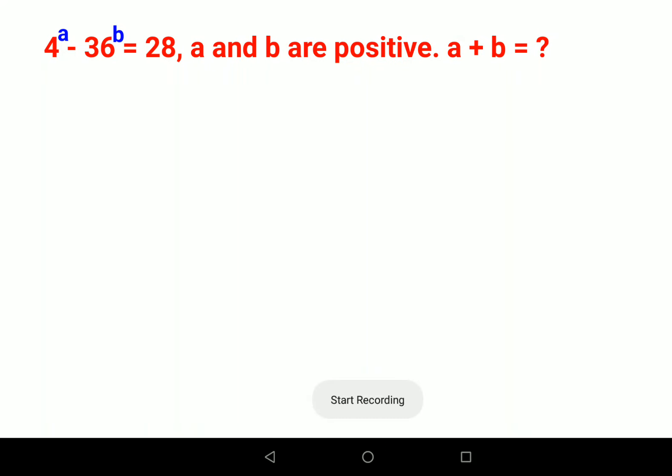Welcome everyone. Today we are trying to understand how to solve 4 raised to a minus 36 raised to b equals 28, and they have given that a and b are positive and we need to find the value of a plus b.